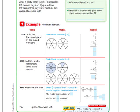So the process is just a little bit different than your regular way of adding fractions. The problem says after a party there were 1 and 4/6 quesadillas left on the tray and 2 and 3/6 quesadillas left on another tray. How much of the quesadillas were left? So we need to add 1 and 4/6 plus 2 and 3/6.